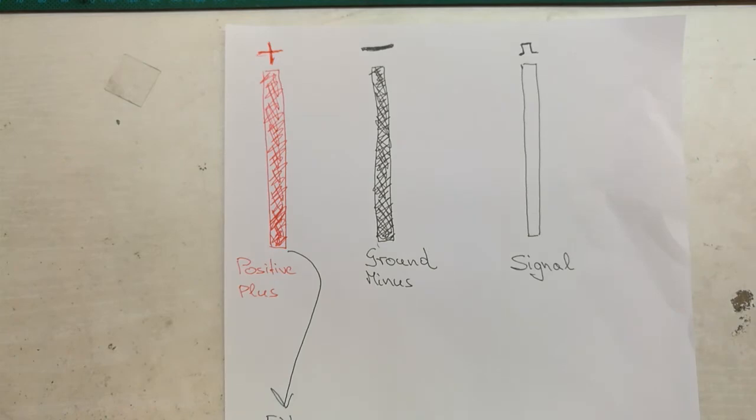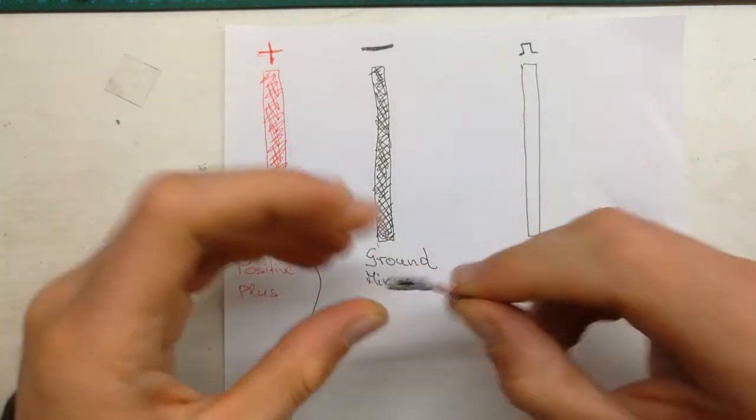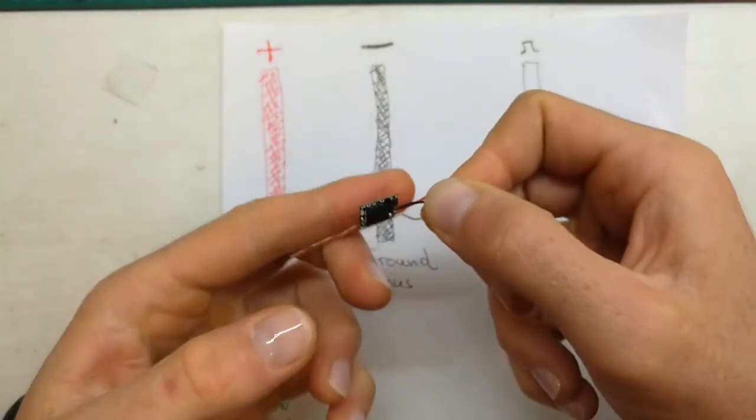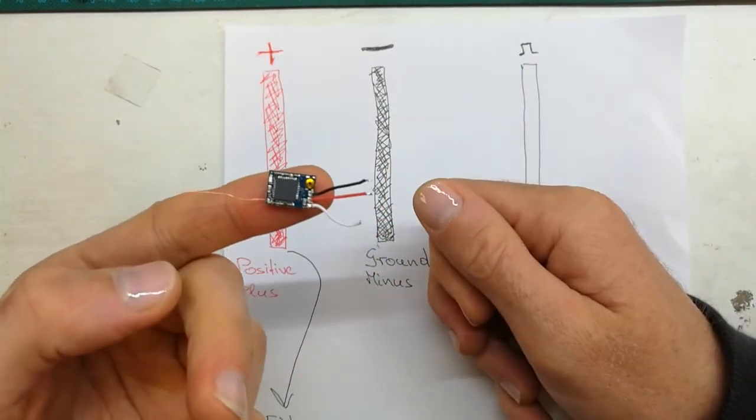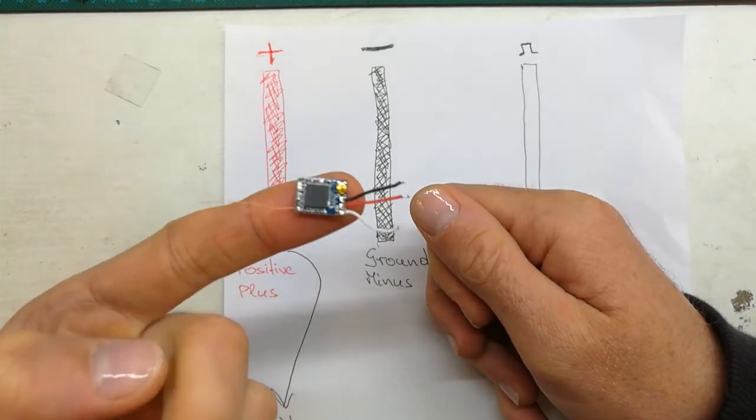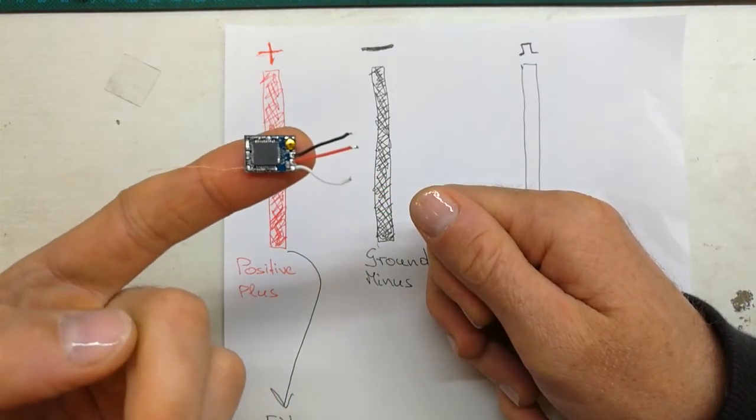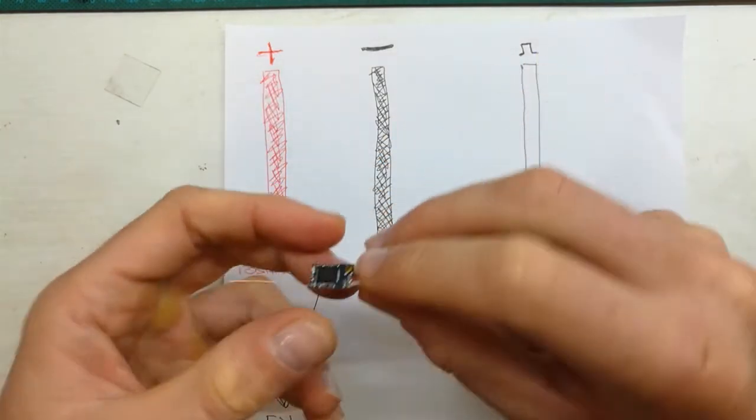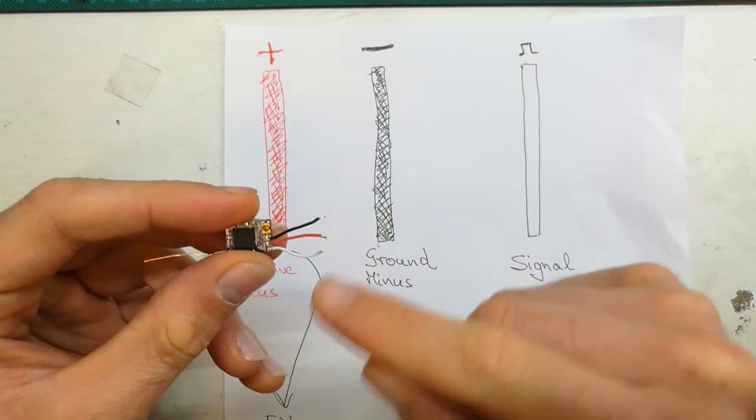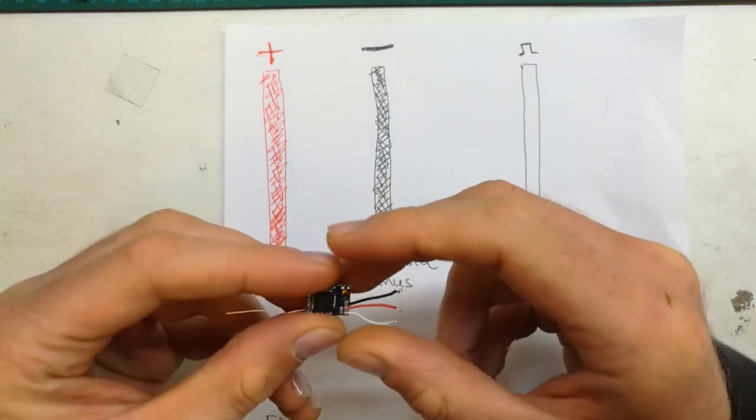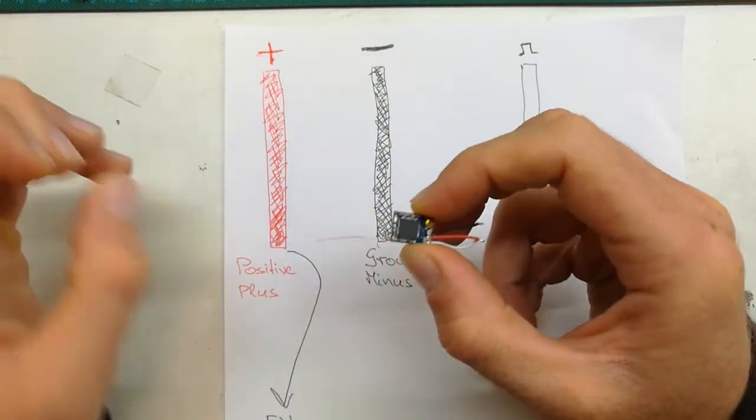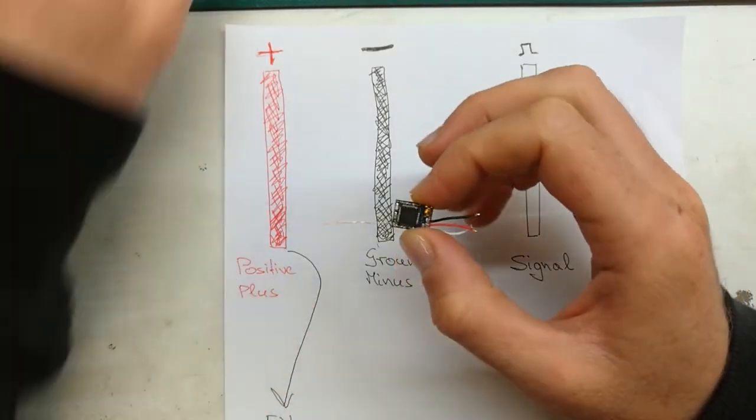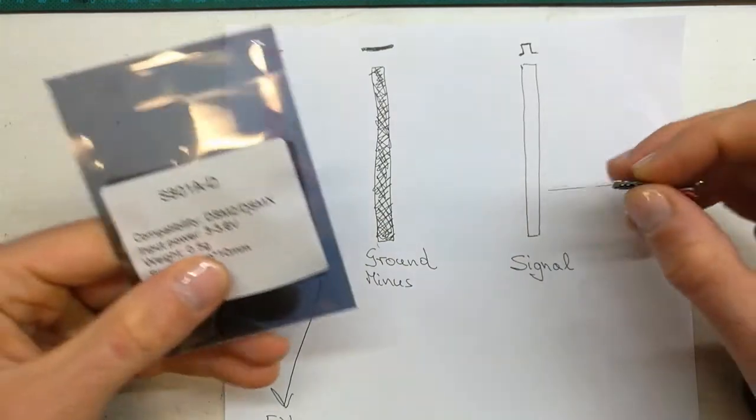Sometimes we may come to a situation where we do not have any information on the receiver at all. This is another receiver and look, because it's probably so tiny or maybe they don't care, there are no signs on it at all. So how do I know where to solder the wires? You can get it from the manual or schematic.